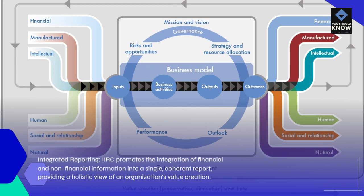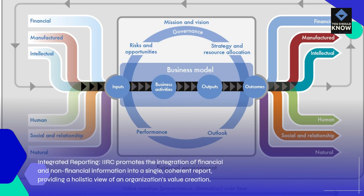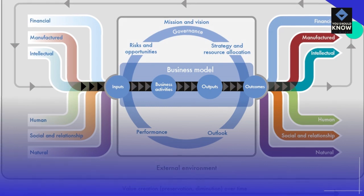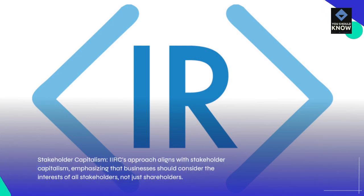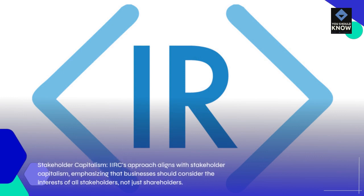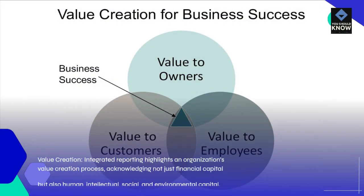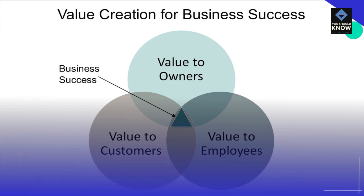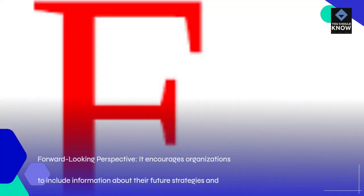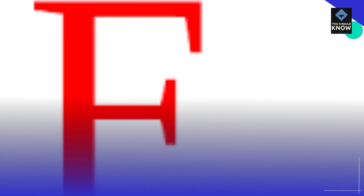Key Features. Integrated Reporting: IIRC promotes the integration of financial and non-financial information into a single, coherent report, providing a holistic view of an organization's value creation. Stakeholder Capitalism: IIRC's approach aligns with stakeholder capitalism, emphasizing that businesses should consider the interests of all stakeholders, not just shareholders. Value Creation: Integrated Reporting highlights an organization's value creation process, acknowledging not just financial capital but also human, intellectual, social, and environmental capital. Forward-looking Perspective: It encourages organizations to include information about their future strategies and how they intend to create and preserve value.